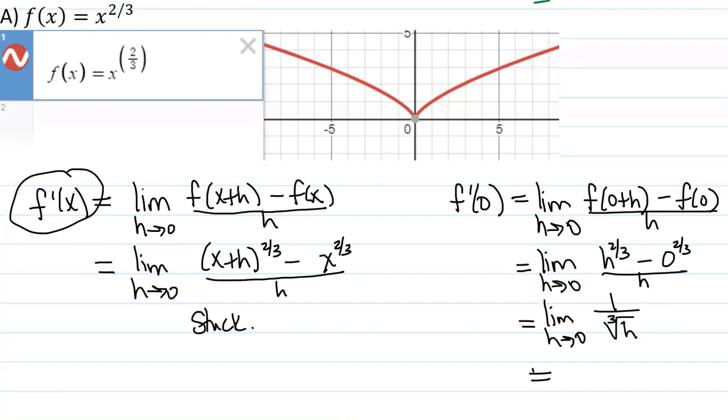Well, by the limit laws, if this limit exists, it should be the same as the cubed root of the limit of one over h if it exists. But what's the limit as h goes to zero of one over h? It does not exist. That's right.